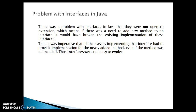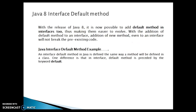It was imperative that all the classes implementing that interface had to provide an implementation for the newly added method, even if the method was not needed. Thus, interfaces were not easy to evolve. That's the reason Java 8 allowed adding method definitions in the interfaces itself.